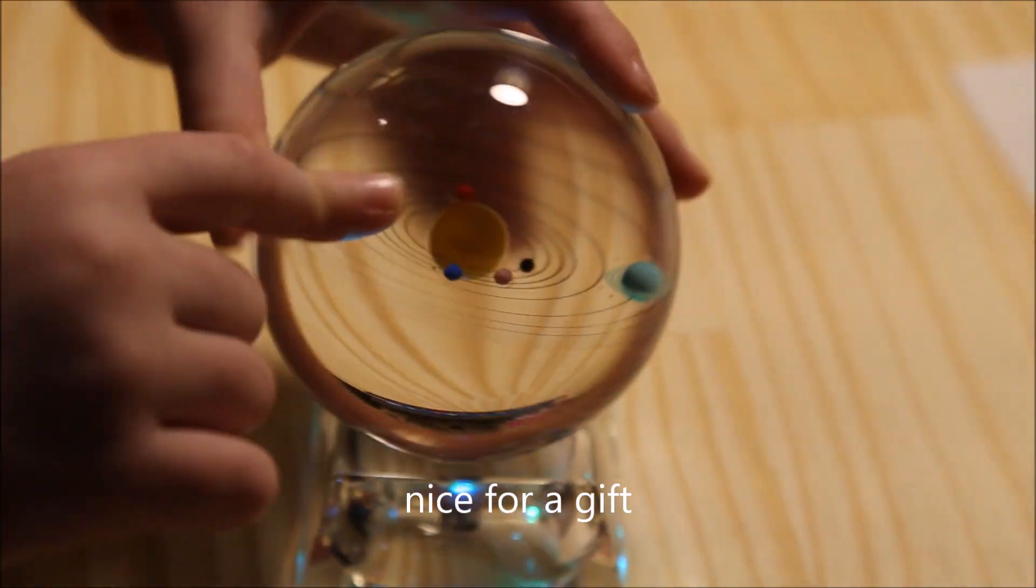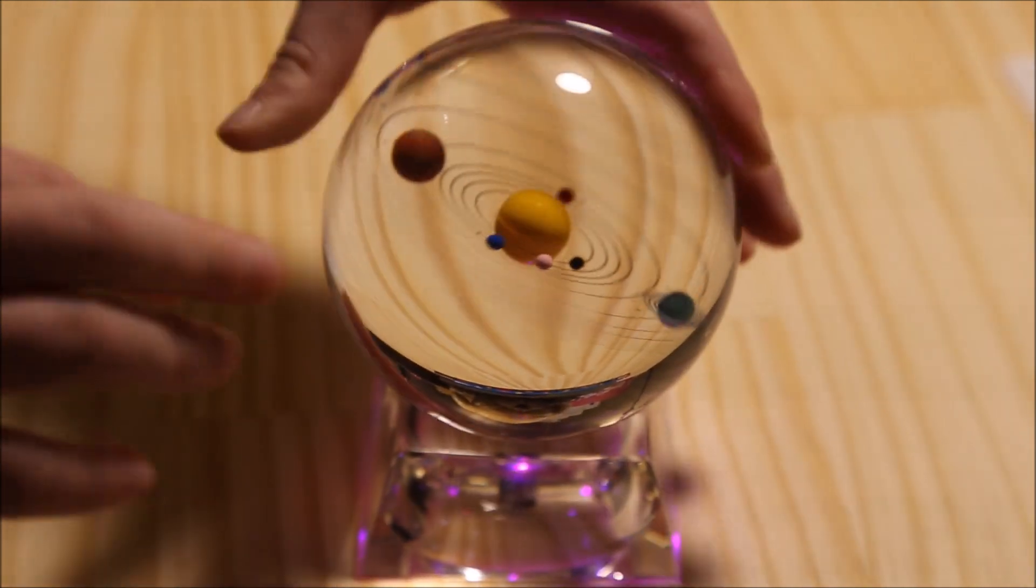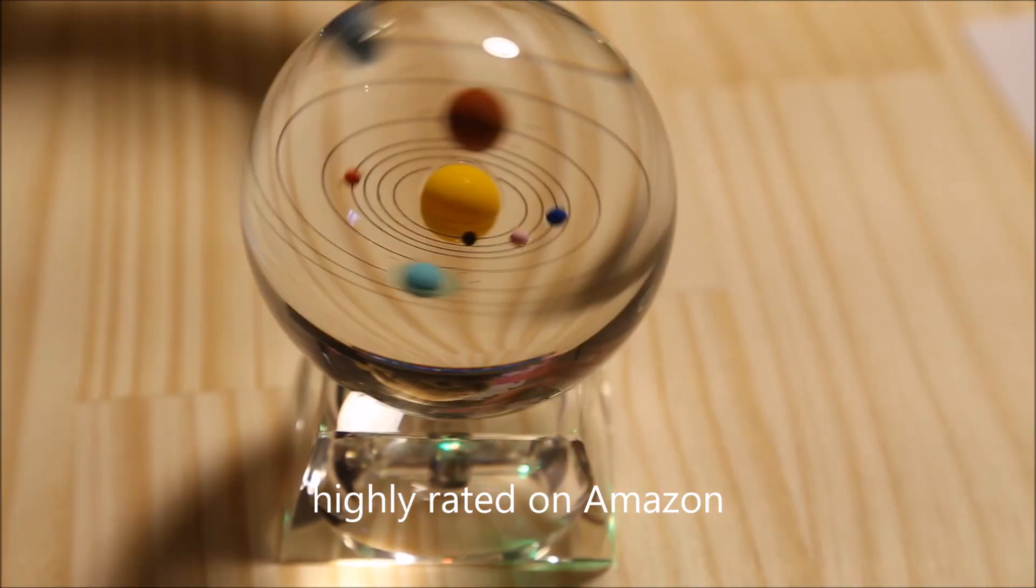This dark blue little circle is the Earth. In the middle is the big Sun. And if you turn it over, it's exactly the same.